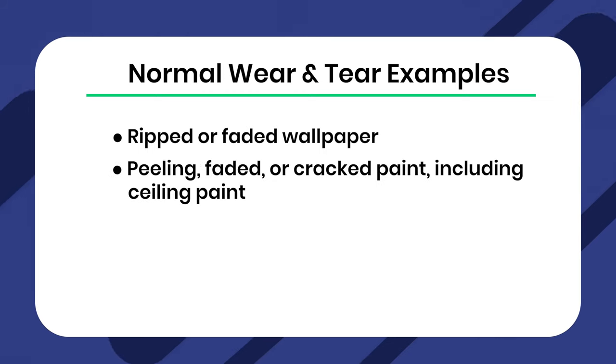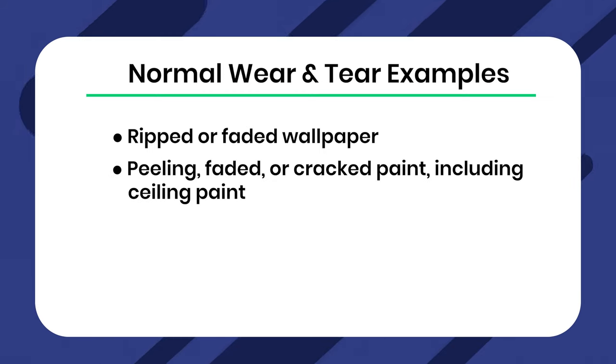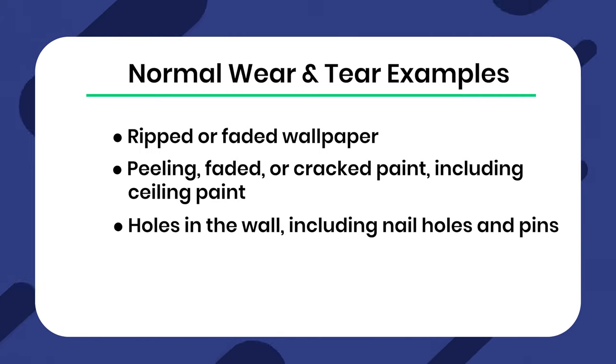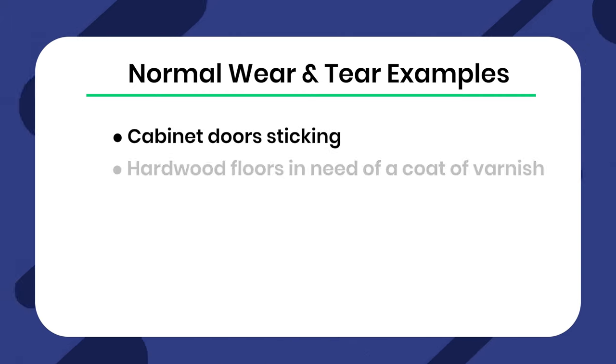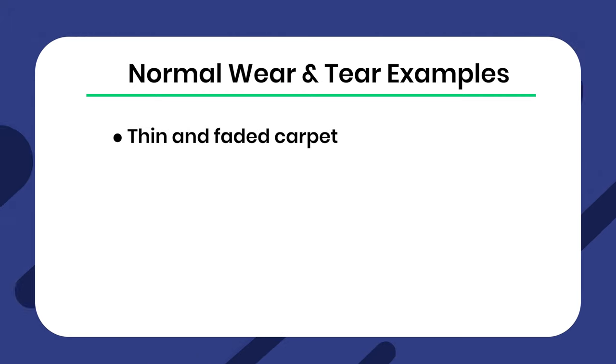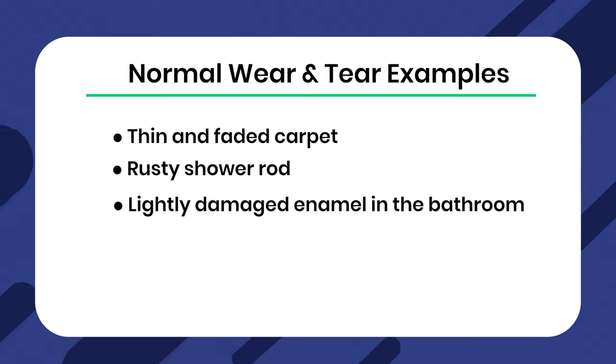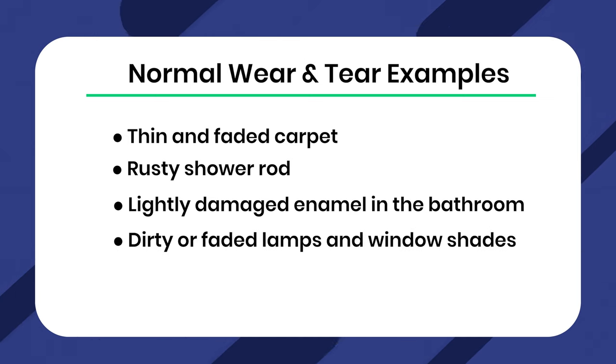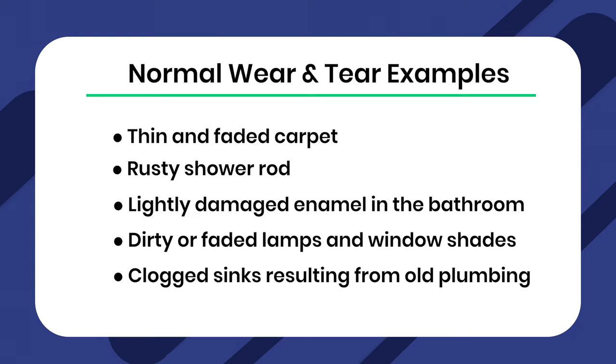The Department of Housing and Urban Development, or HUD, has excellent documentation for defining what is and isn't normal wear and tear. According to that document, normal wear and tear includes: ripped or faded wallpaper; peeling, faded, or cracked paint including ceiling paint; holes in the wall including nail holes and pins; cracks in the walls; cabinet doors sticking; hardwood floors in need of a coat of varnish; loose grouting of tiles; damaged window panes as a result of faulty foundations; thin and faded carpet; rusty shower rod; lightly damaged enamel in the bathroom; dirty or faded lamps and window shades; and clogged sinks resulting from old plumbing.